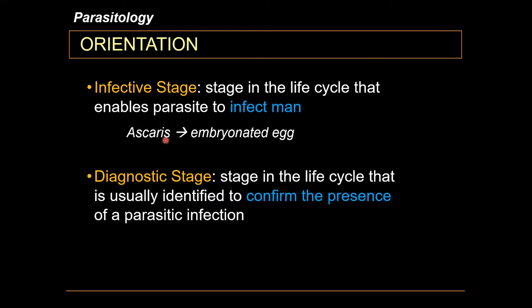For example, in the case of Ascaris — one of the more well-known human parasites — the embryonated egg is the infective stage. Other stages of the parasite cannot infect humans; for example, the larval stage of Ascaris cannot infect humans, and neither can the large spaghetti-like adult worms.